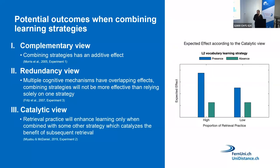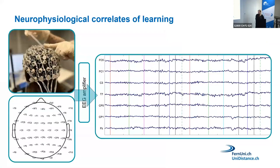There is also a conditional relationship, where we do not expect a main effect of retrieval practice unless another strategy is added on top. Beyond behavioral measures, we can also use neurophysiological correlates of learning. We use a passive sponge-based electrode system — electroencephalography with 64 channels. EEG measures very small voltage changes; the signal is driven by an amplifier, and on the monitor you see a wave-like pattern for each channel.